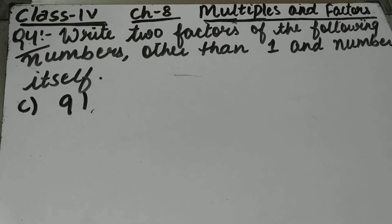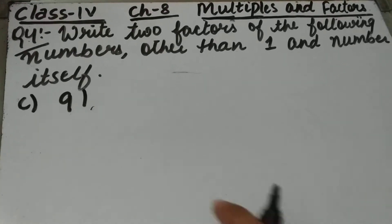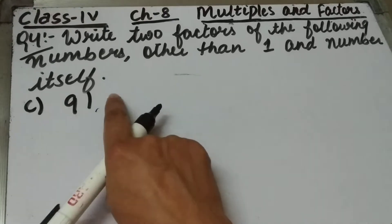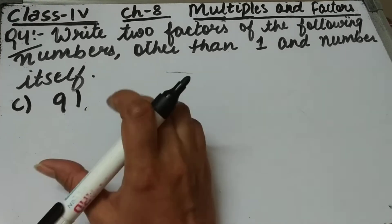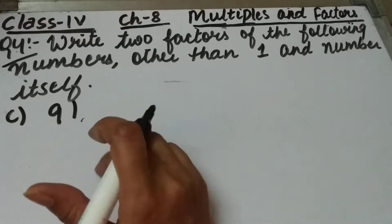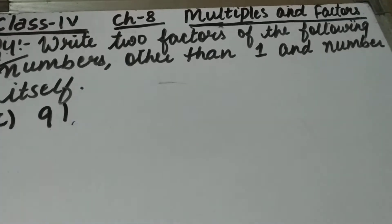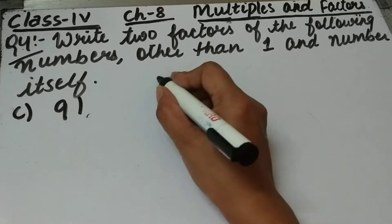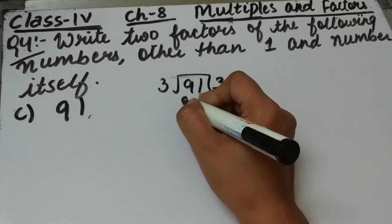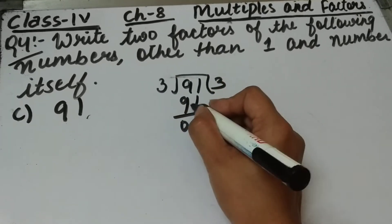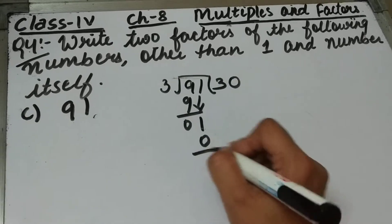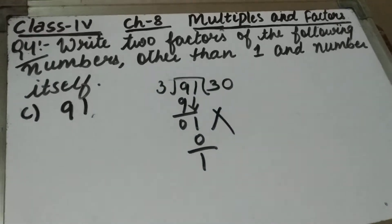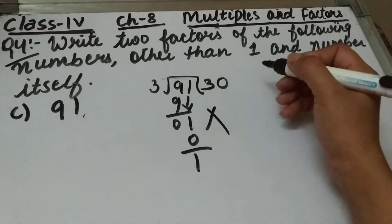Part C is 91. The 1's place is 1, that means this is an odd number, so 2 is not a factor of 91. After that we will check 3 — whether 91 is divisible by 3 or not. 3 threes are 9, remainder 0, bring this 1 down, 3 zeros are 0, remainder is 1. That means 3 is not a factor of 91.